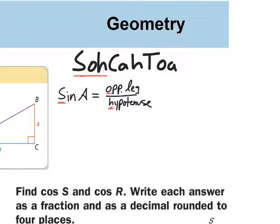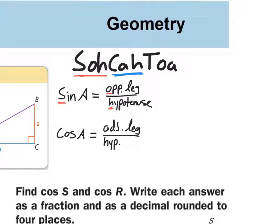The C-A-H part of SOHCAHTOA is for cosine, which we abbreviate as COS. Cosine of angle A equals the adjacent leg over the hypotenuse. So C-A-H: cosine is adjacent over hypotenuse.